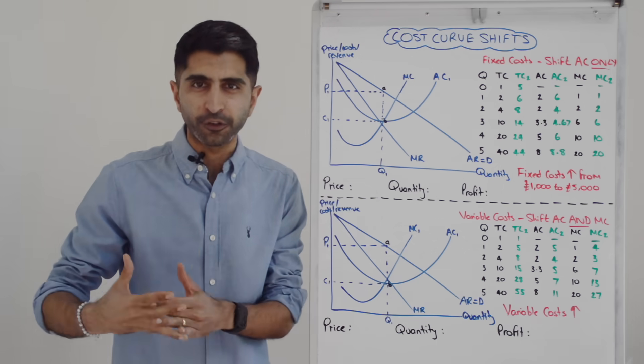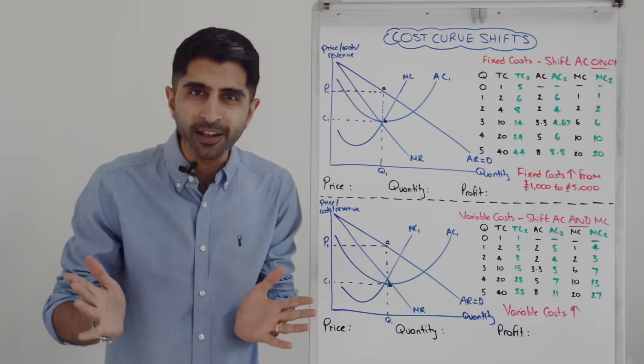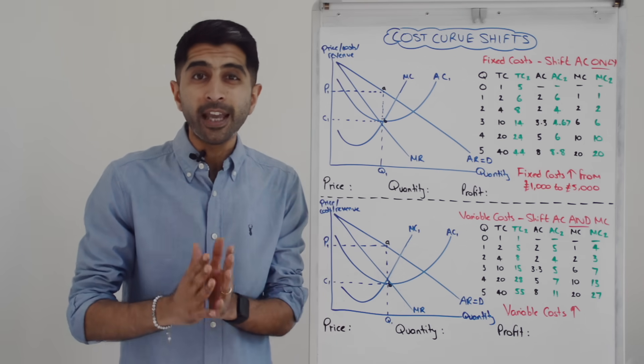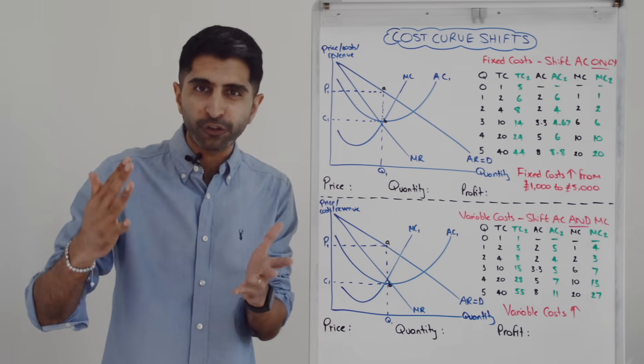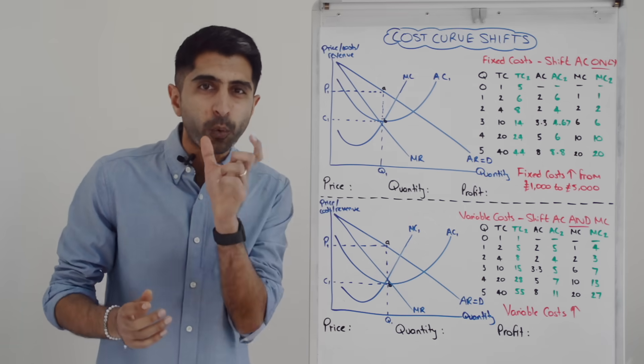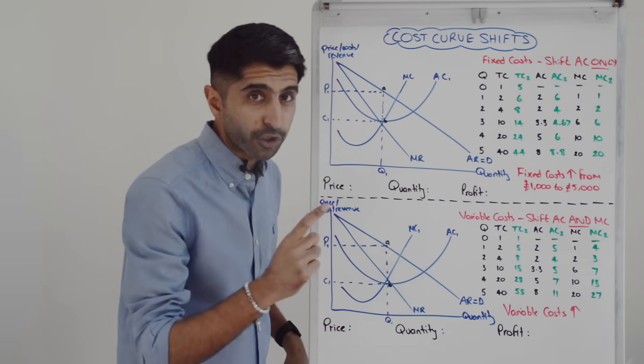But the cost curves that we shift very much depend on the type of costs that have changed. For example, imagine there is a change in fixed costs. Good examples of that would be rent or advertising, salaries, insurance payments, interest payments on loans. If any of those costs change, they're a change in fixed costs. We only shift the average cost curve.